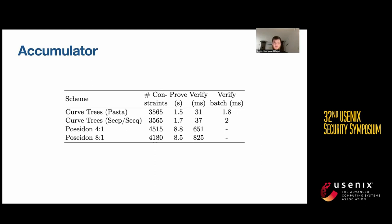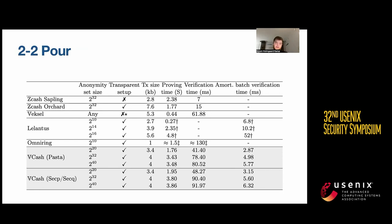If we instead instantiate a simple anonymous payment system from select and randomize, we see that we perform almost as good on transaction size and proving time as Zcash Sapling, which is based on a trusted setup. But we cannot really compete on the verification time unless we advertise ours using batch verification.